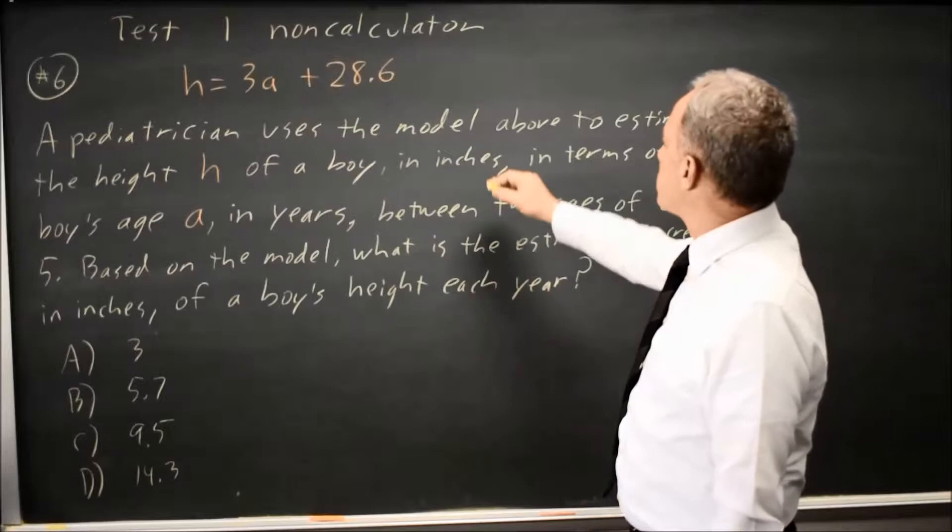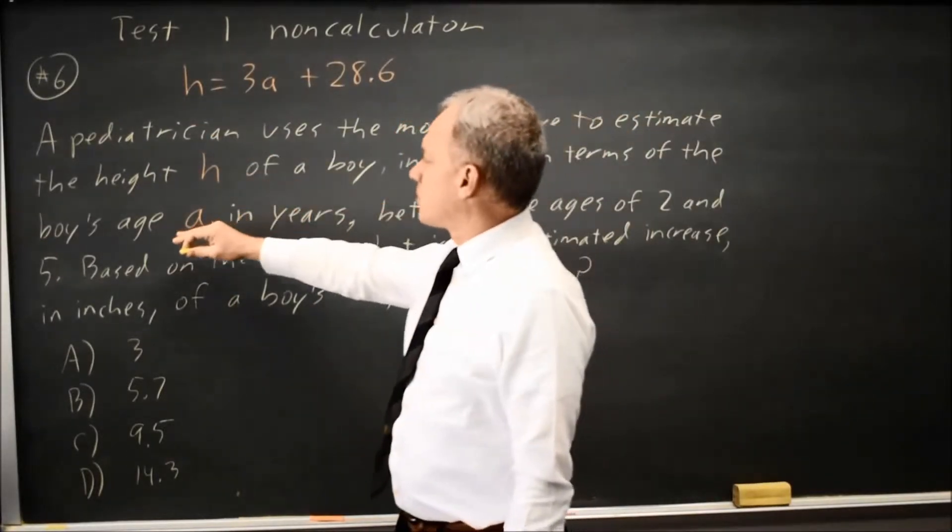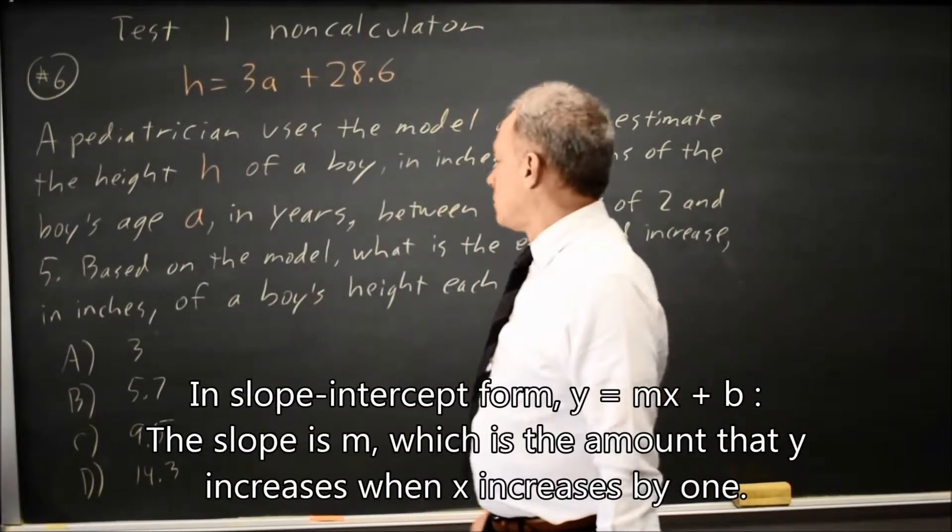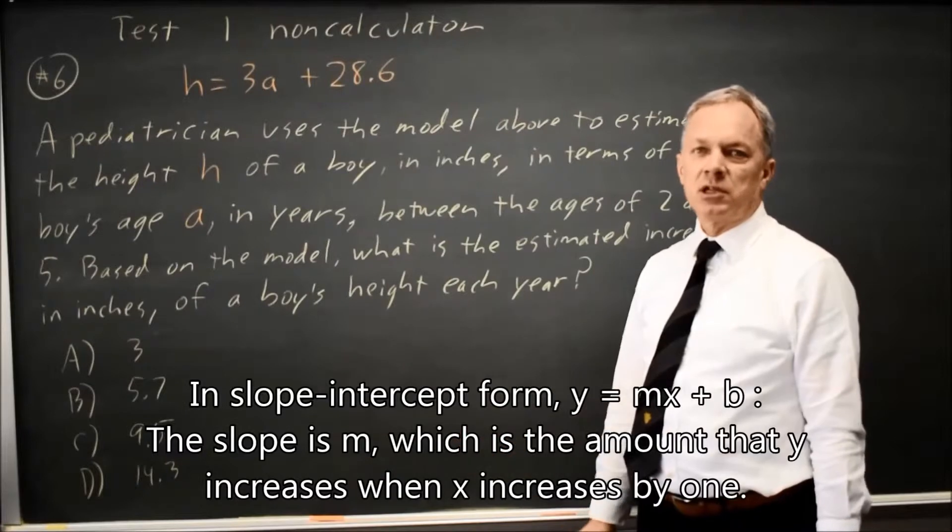In this case, a pediatrician uses the model to estimate the height of a boy in inches in terms of the boy's age A. So the increase in height per year will be the slope, 3.